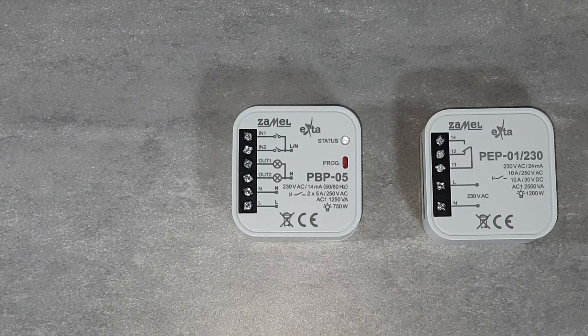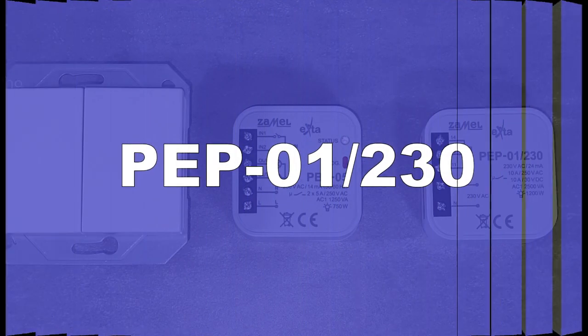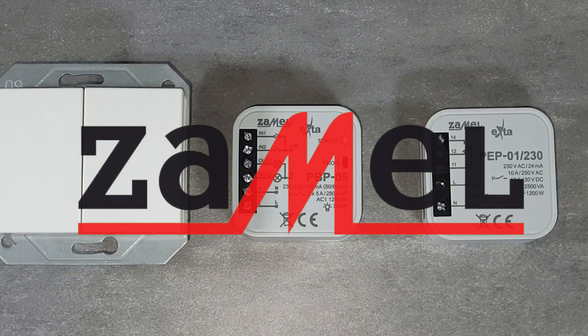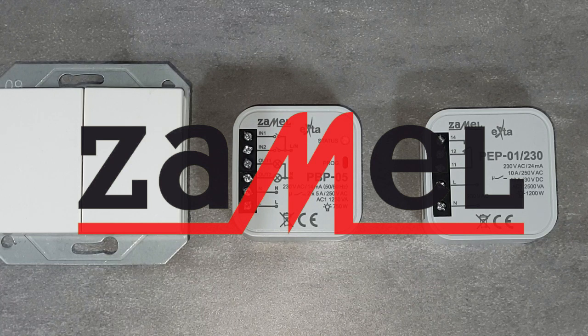In this example, the bistable relay will work together with the electromagnetic relay PEP01230, which will cut off the power supply from the bistable relay once the central lighting button is pressed.